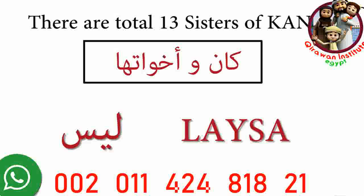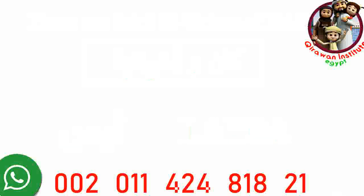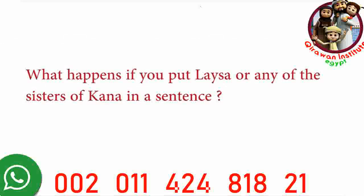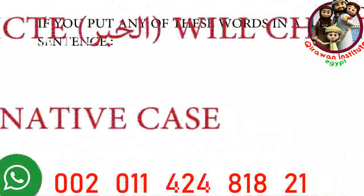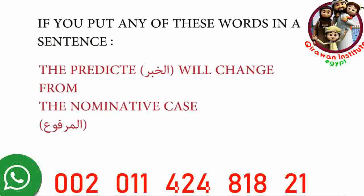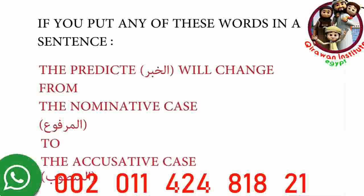The other sisters of kana will be addressed at a different time. So what happens if you put leysa, or any of the sisters of kana, in a sentence? If you put any of these words in a sentence, the predicate, al-khabar, will change from the nominative case, al-marfuah, to the accusative case, al-mansu. Let's look at an example.